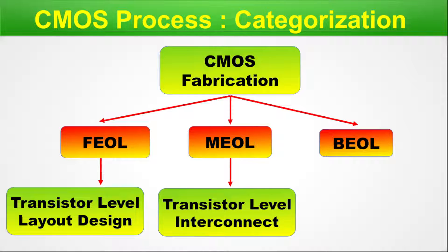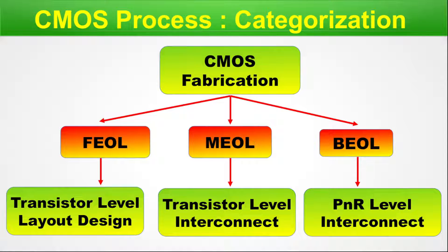In front end of line we develop the transistor level layout design into the silicon wafer. In middle end of line we do the transistor level interconnect — keep in mind this level of interconnect is only for the transistor level. And in back end of line we do the PNR level interconnect. So once your GDS2 is ready during the actual semiconductor fabrication process, it fits into three parts: FEOL, MEOL, and BEOL, according to which the different stages are fabricated.